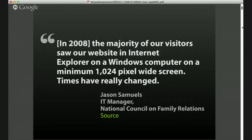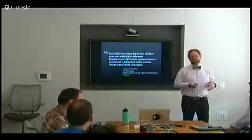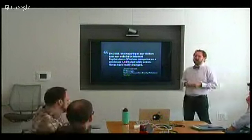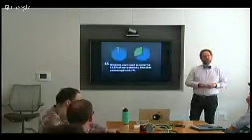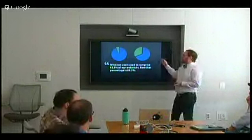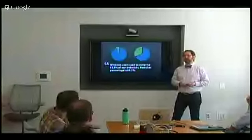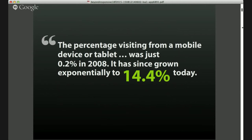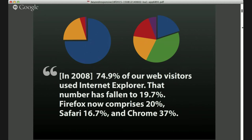This wasn't a cutting-edge Apple or Amazon — just a nonprofit organization. In 2008, most people were on Internet Explorer on a Windows device at 1024 wide. But Windows visits dropped from 93.5% to 68.2%, eaten into by OS X, iOS, and Android. Mobile increased dramatically from 0.2% in 2008 to 14.4%, growing 200 to 400 percent a year.